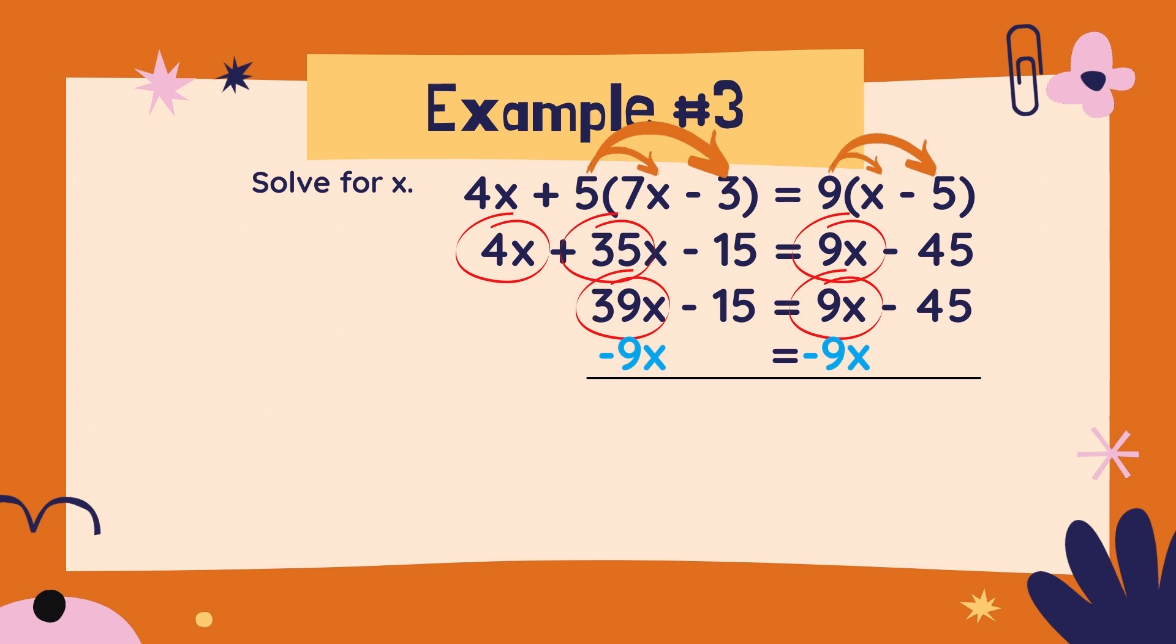Subtracting 9x is going to make it so there are no x's on the right side. So we need to take away the negative 15 from the left and get it over to the right side. So getting rid of that negative 15 means we need to add 15 to both sides. When we do all of this math, we're going to have 30x equals negative 30.